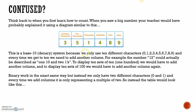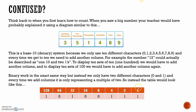Binary works in the exact same way, but instead we only have two different characters. Every time we add an extra column, it's only representing a multiple of 2 instead of 10. So instead of having units, tens, hundreds, thousands, 10,000, 100,000, millions and so on - we'd simply have a single unit, then how many 2s, how many 4s, how many 8s, how many 16s. So 1, 2, 3, 4, 5 columns across when we get to 16s. I've used a binary number: 1, 0, 1, 0, 0, 1, 1, 1.